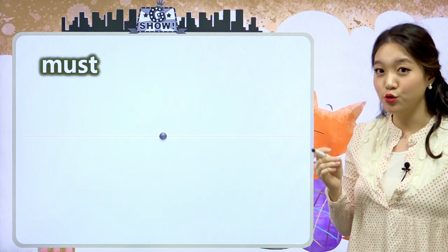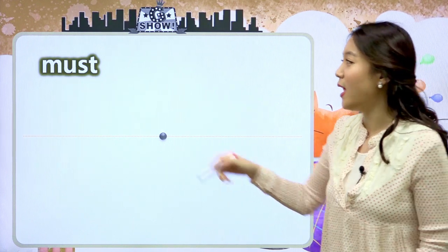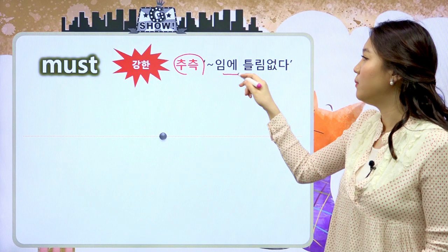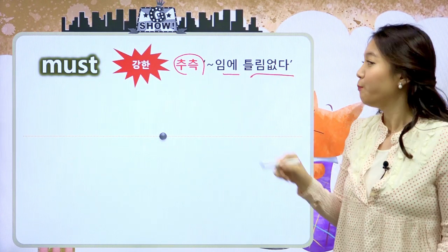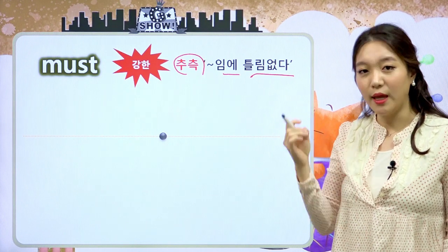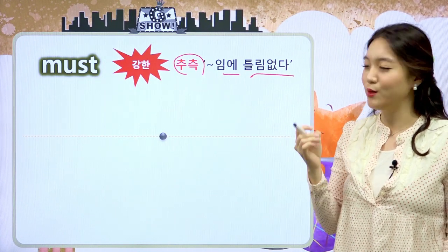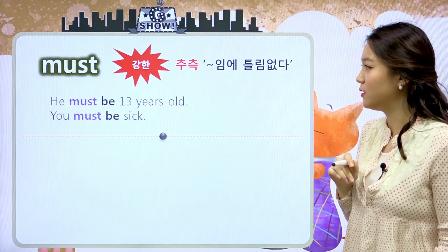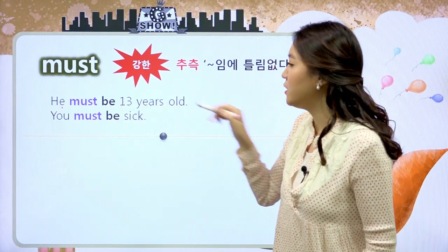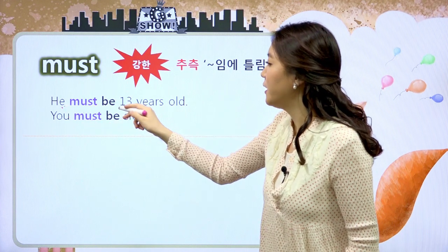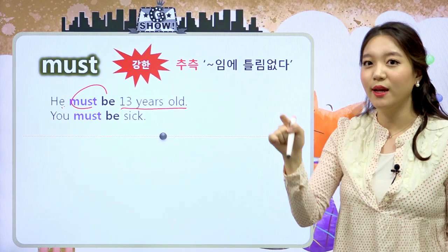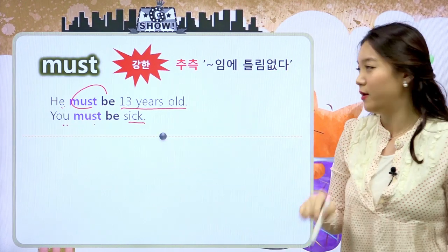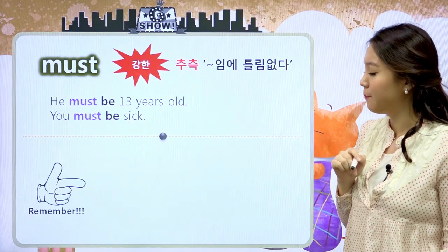have to는 뭐뭐 해야 한다, must도 뭐뭐 해야 한다라는 공통적인 의미가 있었죠. 그런데 must는 다른 뜻이 또 하나가 있어요. 그게 무엇이냐면 강한 추측입니다. 뭐뭐임에 틀림없어라는 거예요. 지난 시간에 would도 배웠었고 may도 추측을 한다, might도 추측을 한다 라고 했었죠. must도 추측 기능을 가지고 있습니다. 그런데 아주 강한 추측이에요. 해석은 틀림없다라고 해석이 된다는 거예요. 'He must be 13 years old' 하면 그는 13살임이 틀림없어. 'You must be sick' 하면 너는 지금 아픈 것이 틀림없어라고 아주 강한 추측을 나타내는 문장입니다.